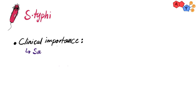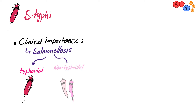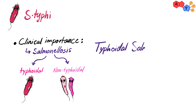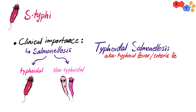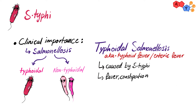First we have Salmonellosis. There are two types of presentation depending on the species of the infecting Salmonella: typhoidal or non-typhoidal. Typhoidal Salmonellosis, also known as typhoid fever or enteric fever, is caused by Salmonella typhi and is characterized by fever, constipation followed by diarrhea, and occasionally rose spots rash.